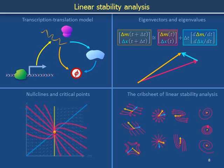In the last video, we qualitatively studied the phase portrait of the transcription-translation model. In this video, we use eigenvector-eigenvalue analysis to obtain equations describing the levels of messenger RNA and protein as functions of time.